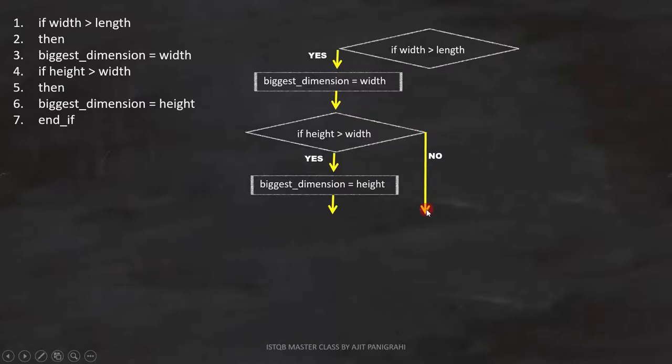That means, if the condition is true, we will follow this path. If the statement becomes false, we have to follow this path.